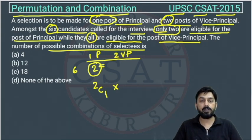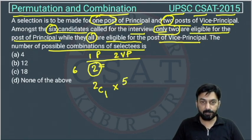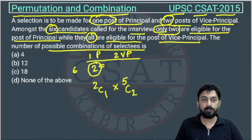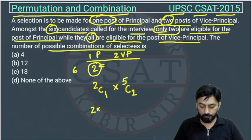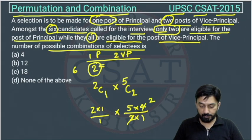Since all candidates are eligible for vice principal, out of the five remaining we will select two candidates for vice principal. This will be 5C2, which equals (5 × 4) / (2 × 1). The two cancels with the four giving us 10, and multiplied by 2C1 which is 2, this gives us 20.